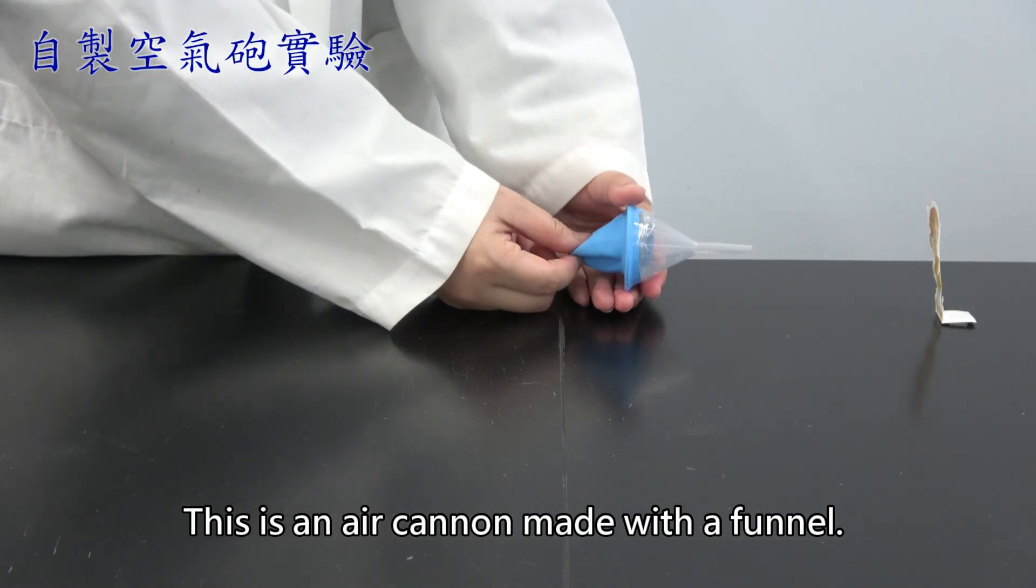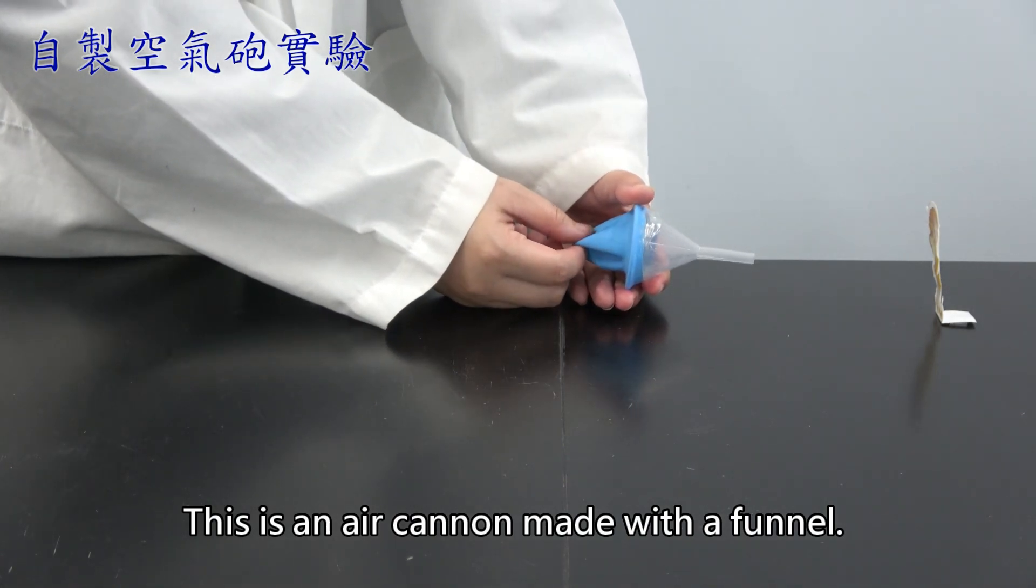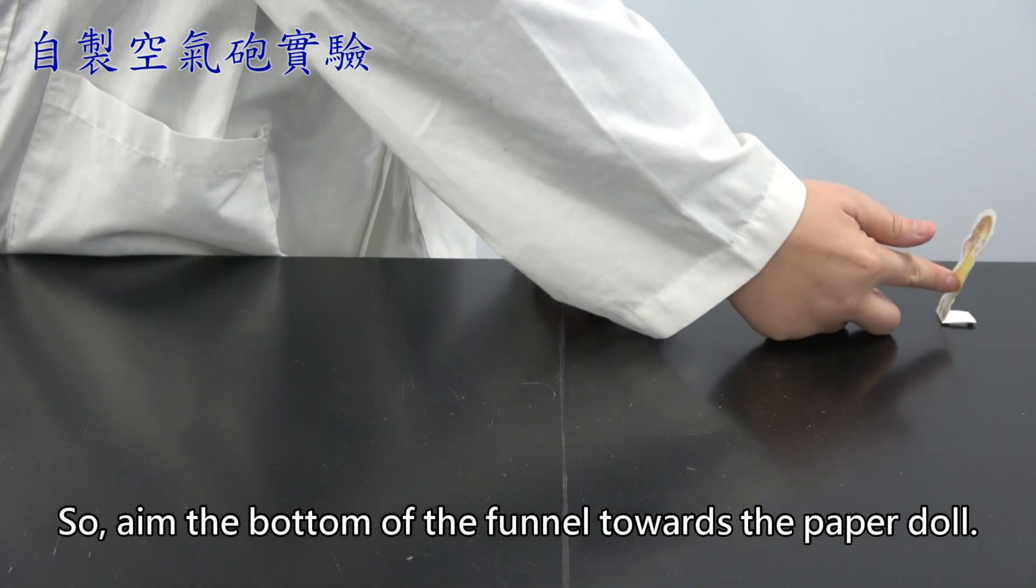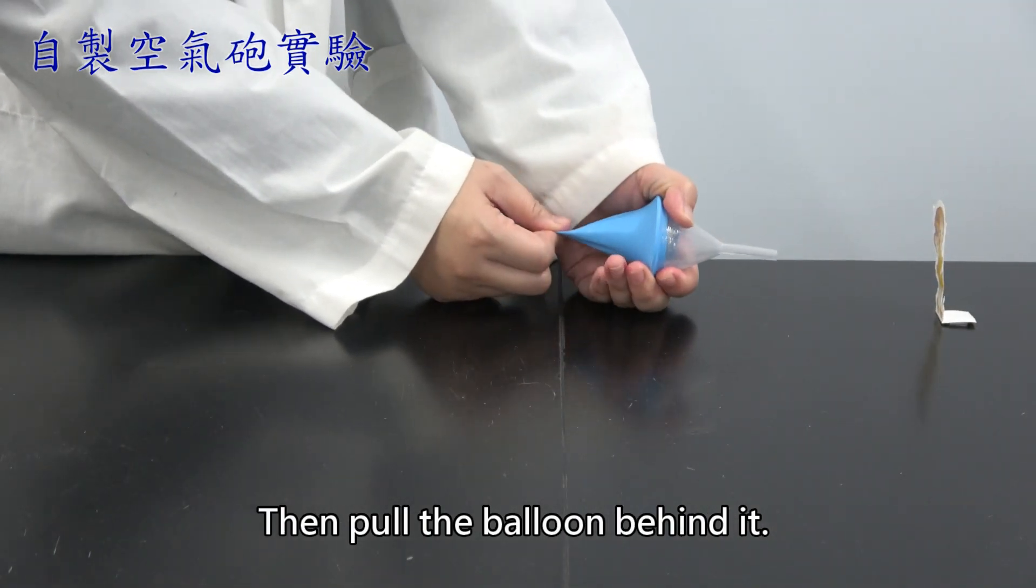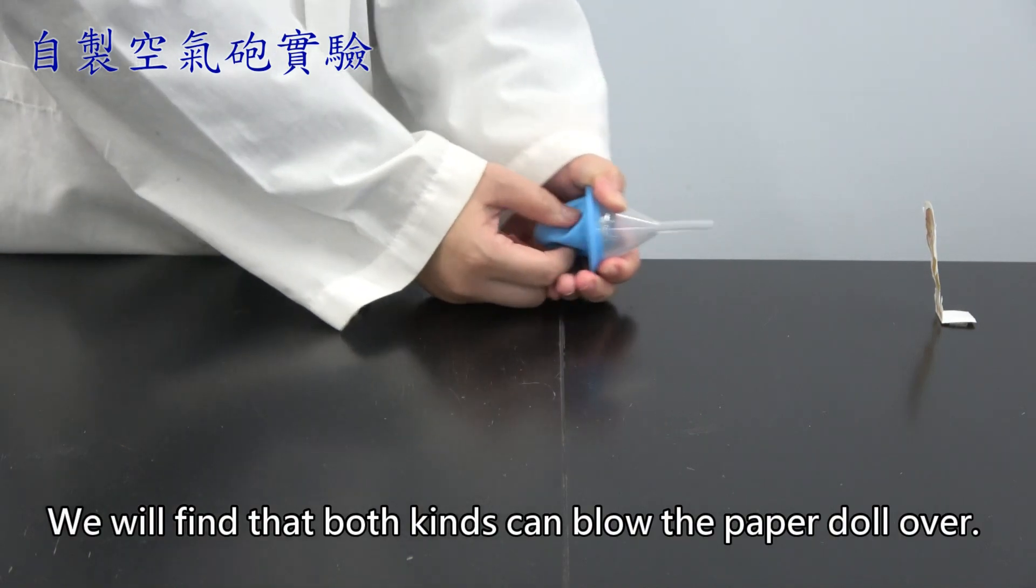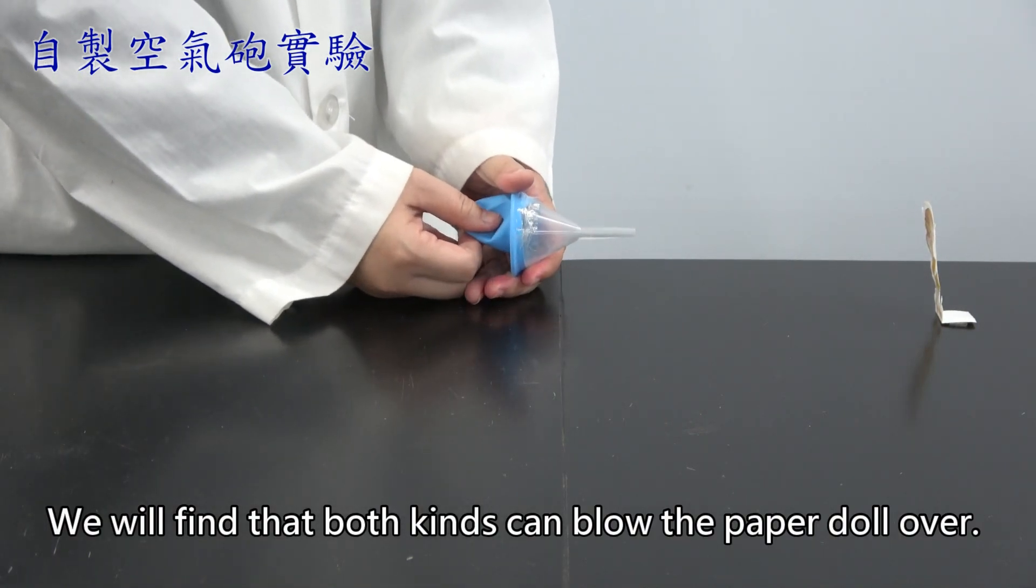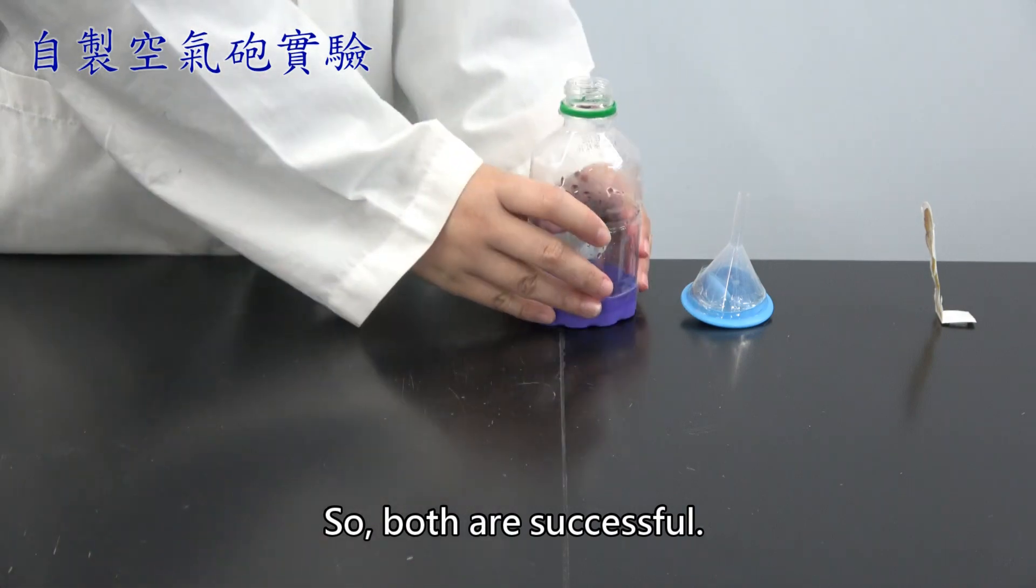This is an air cannon made with the funnel. So, aim the bottom of the funnel towards the paper doll. Then, pull the balloon behind it. We will find that both kinds can blow the paper doll over. So, both are successful.